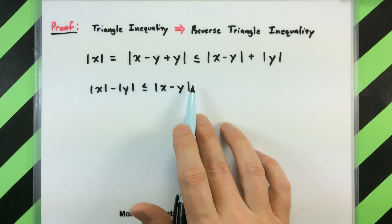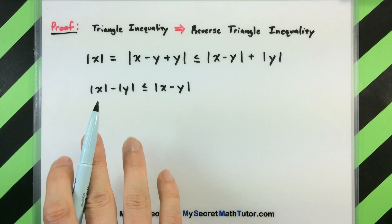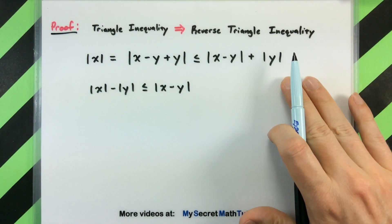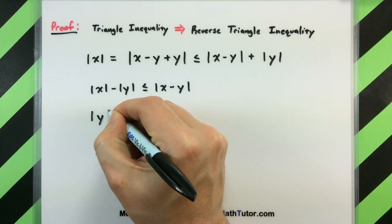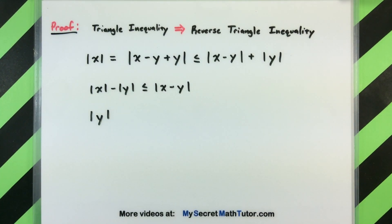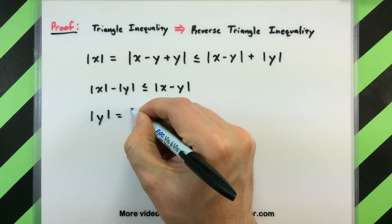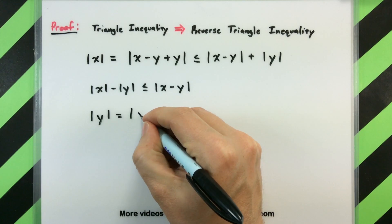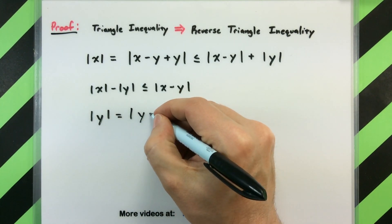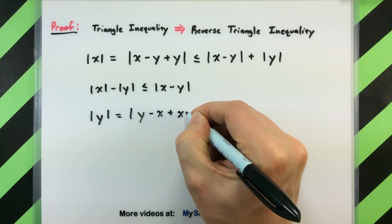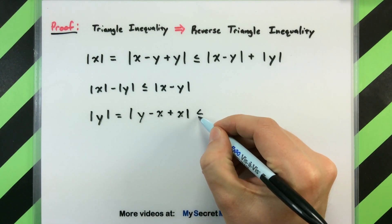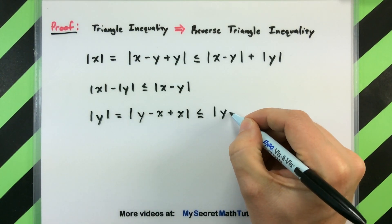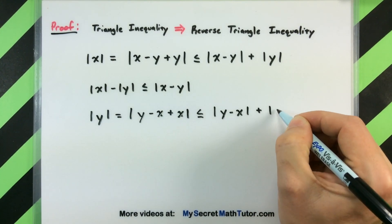We also have to show that the absolute value of x minus y is bigger than this quantity just in the reverse order. Once you've seen it in this direction, you can get a sense that it's not going to be that difficult. We'll just do the exact same thing, only we'll start with the absolute value of y this time. Using the same trick as before, we say that this equals the absolute value of y, and now we'll add and subtract an x — so minus x plus x. Everything's in absolute value, these things are equal right now. Now we'll use our triangle inequality to break this up into the absolute value of y minus x plus the absolute value of x.